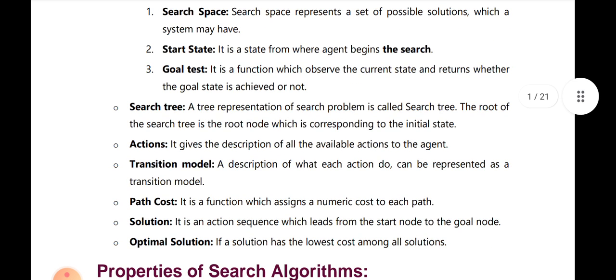What is action? It gives the description of all the available actions to the agent. Next is the transition model — it describes what each action can do. It can be represented as a transition model. The solution can be found in the agent.